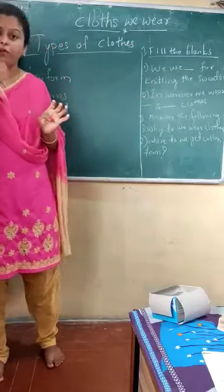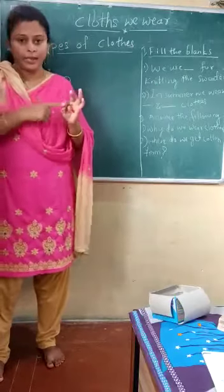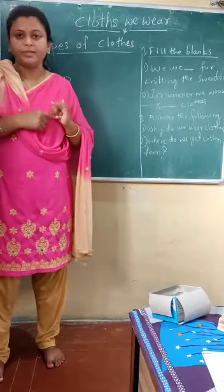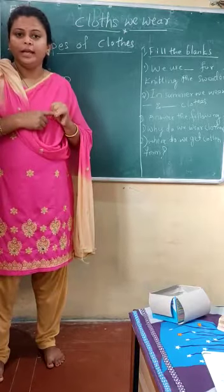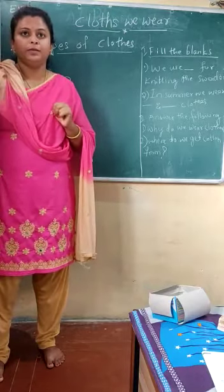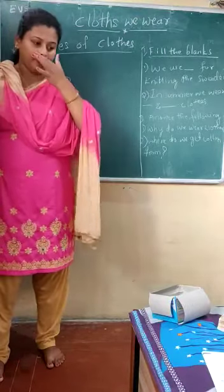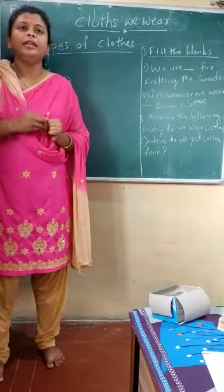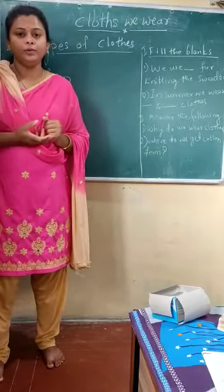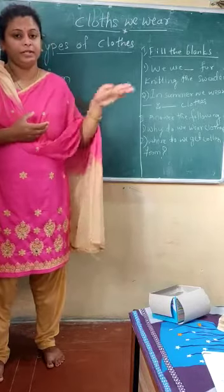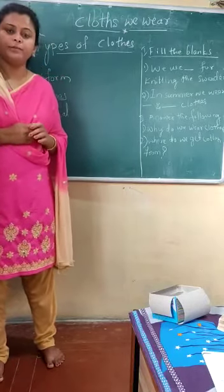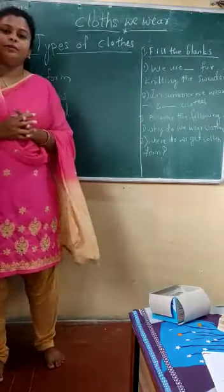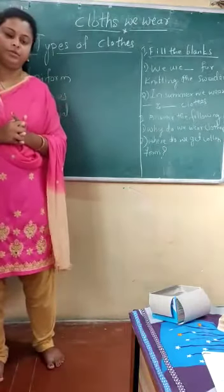Other than this, doctors have the uniform, police have the uniform, some watchmen have the uniform, and some officers also have the uniform. So like this we can see the uniform — that is the first category of the types of cloths.